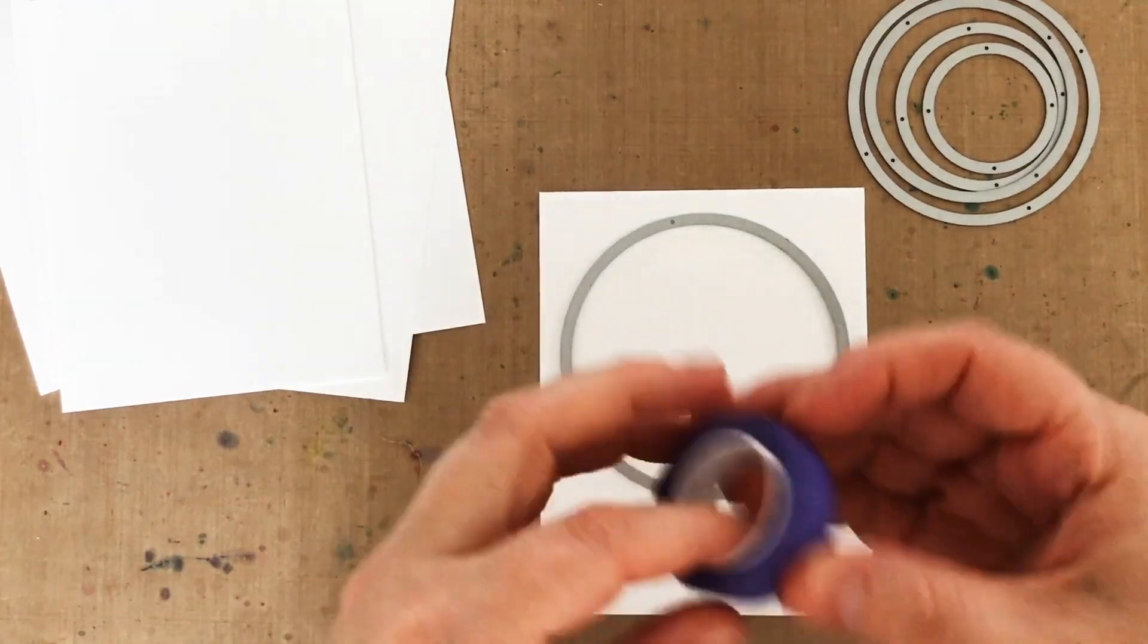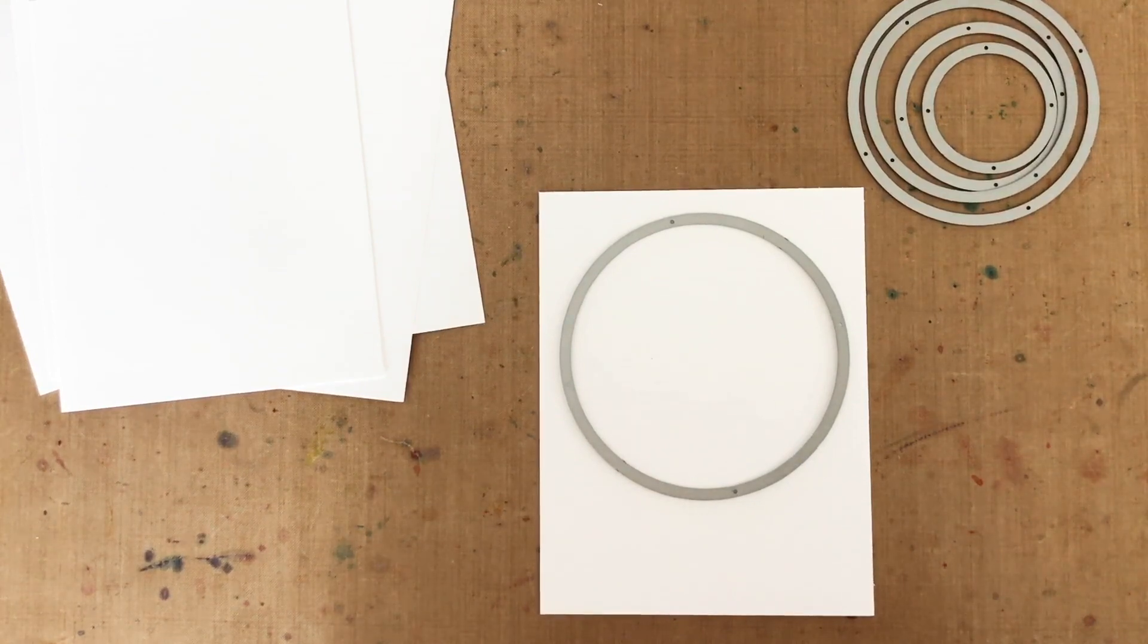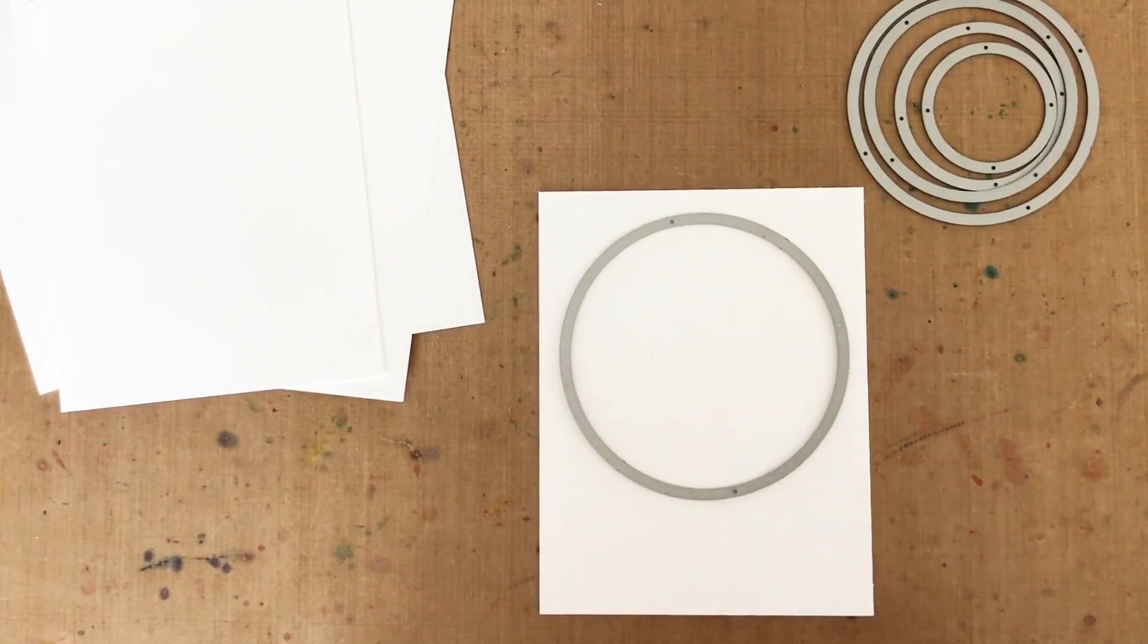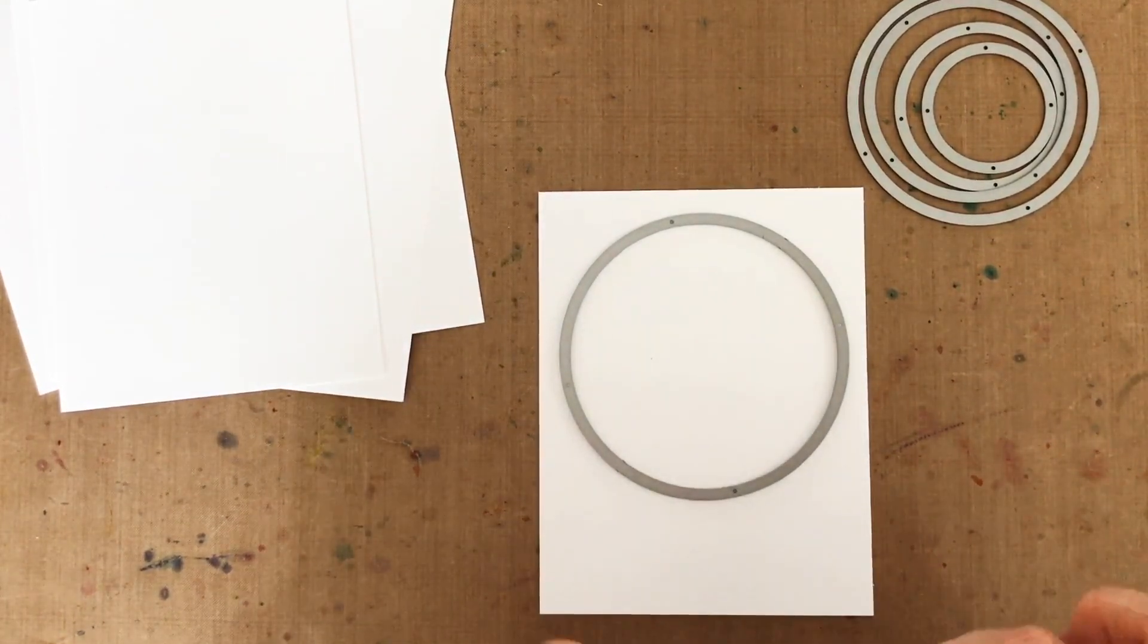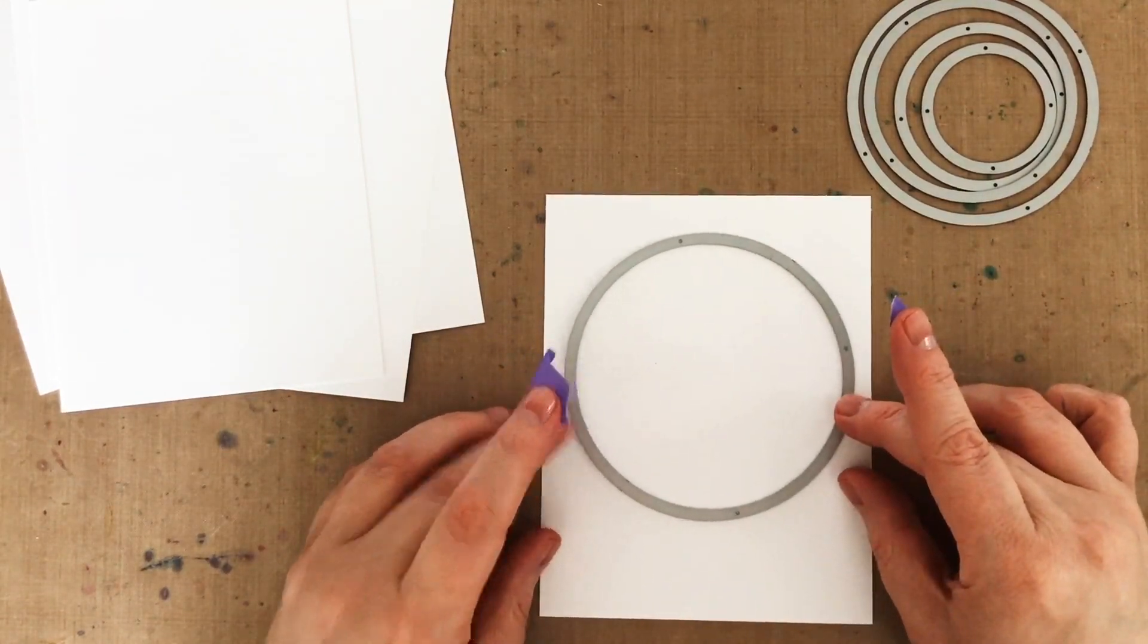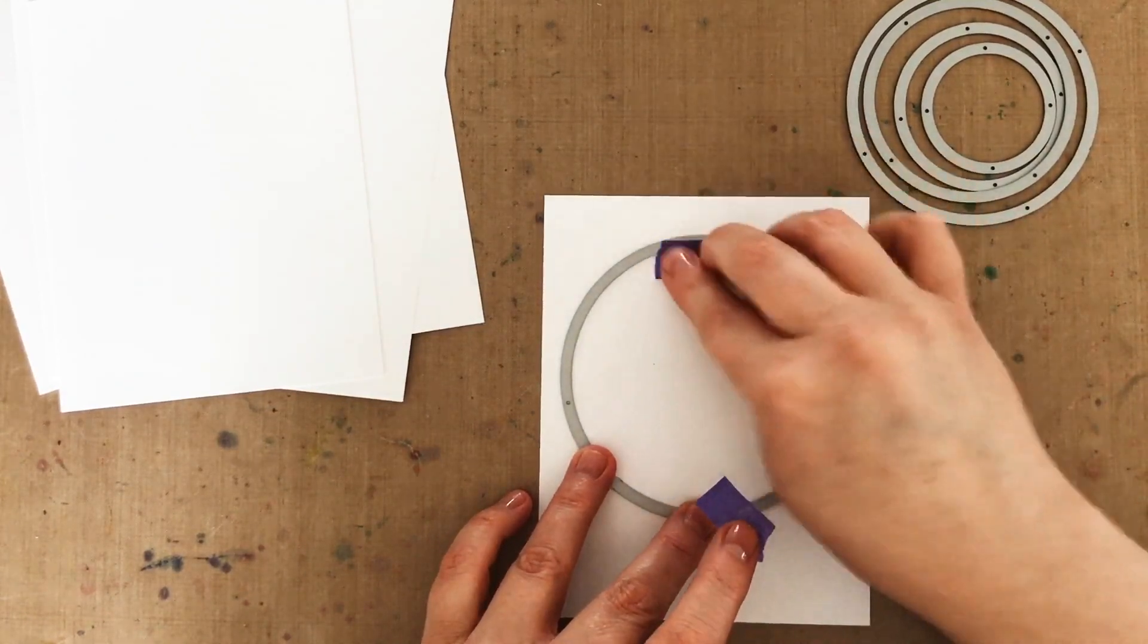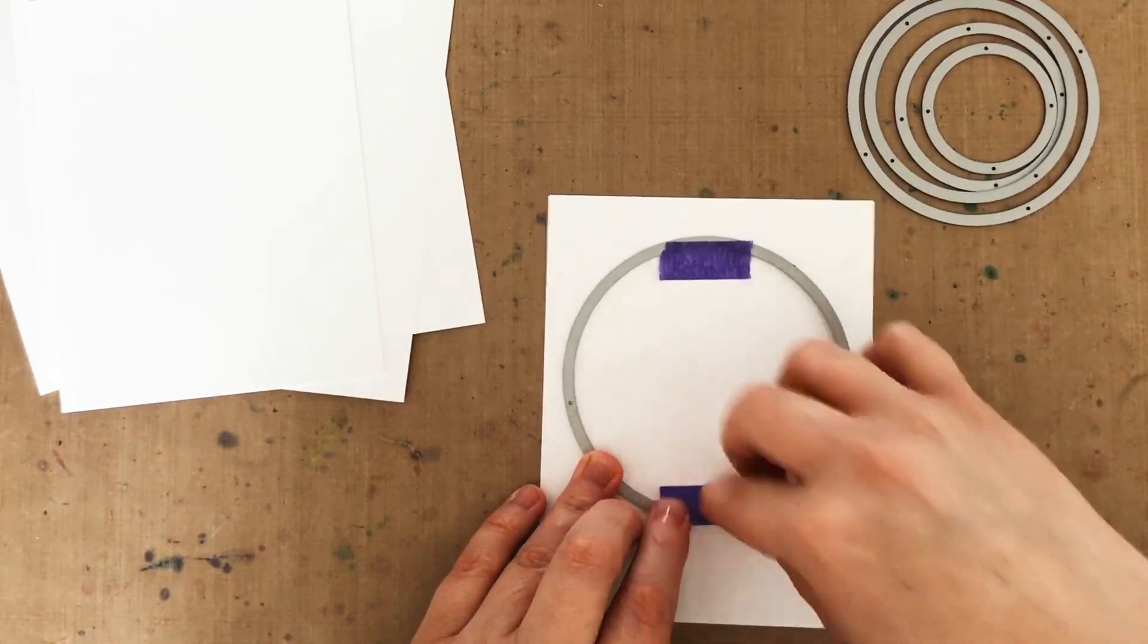Now I've picked out five circle dies from the Essentials circle set, and I'm going to use the largest one on that A2 110 pound panel. That will be the front of my shaker card. Now when I put my die down, I'm kind of just eyeballing it, but you could totally measure. And then I'm using a little low tack purple tape to secure it so I can run it through my die cut machine.